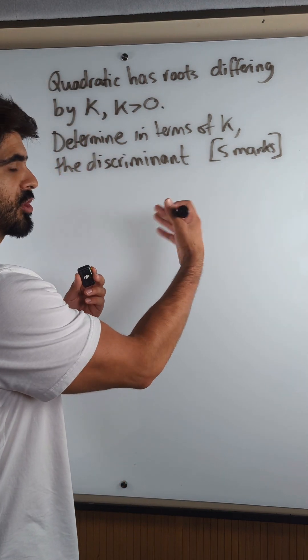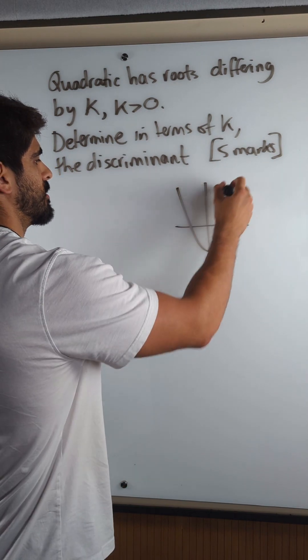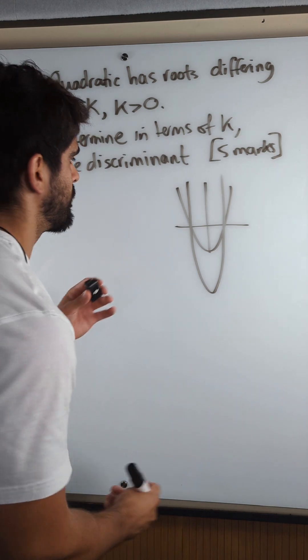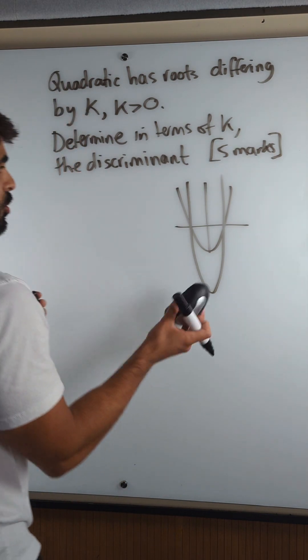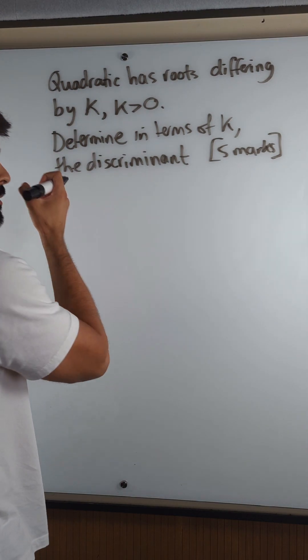Now it doesn't really matter, the coefficient of x squared in this case, because in terms of roots you can have any kind of quadratic where you multiply the y values by a constant, you can still have the same root. So I'm just going to assume the coefficient of x squared here is one.